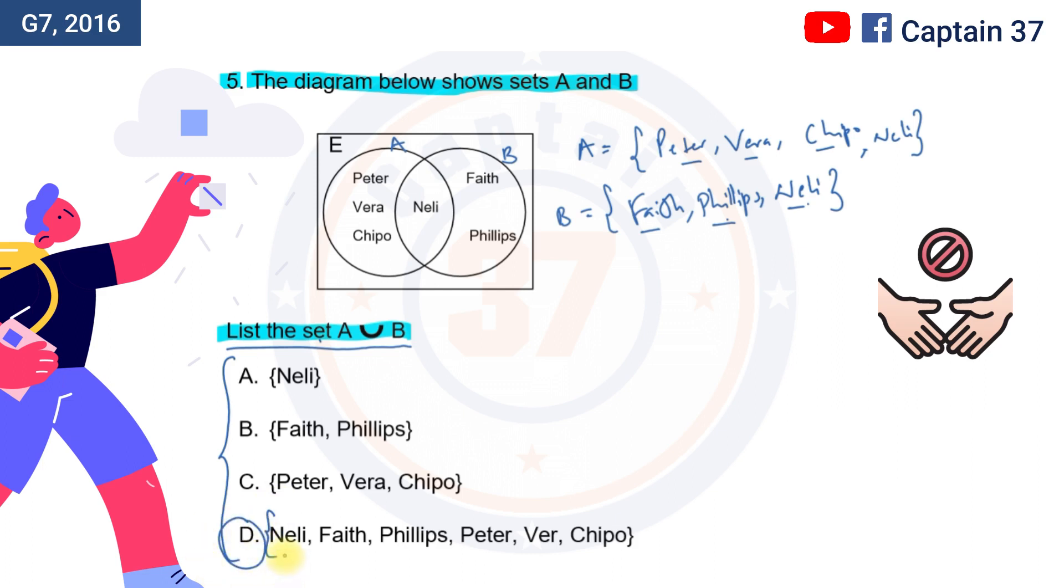Why? Because it is in D that you have Nelly. There's Nelly here, and there's Nelly there. There's Faith and Faith, there's Phillips and Phillips, there's Peter and Peter, there's Vera and Vera, and there is Chippo there.